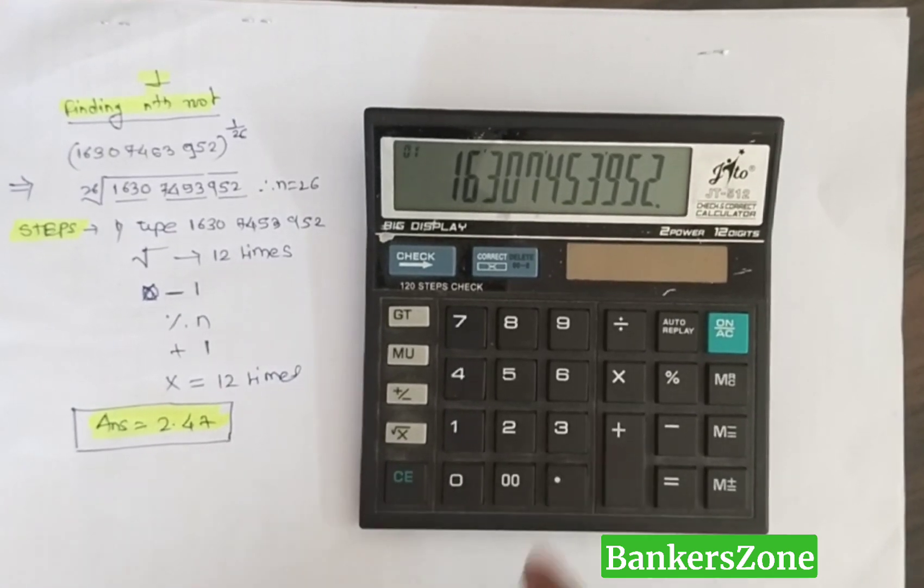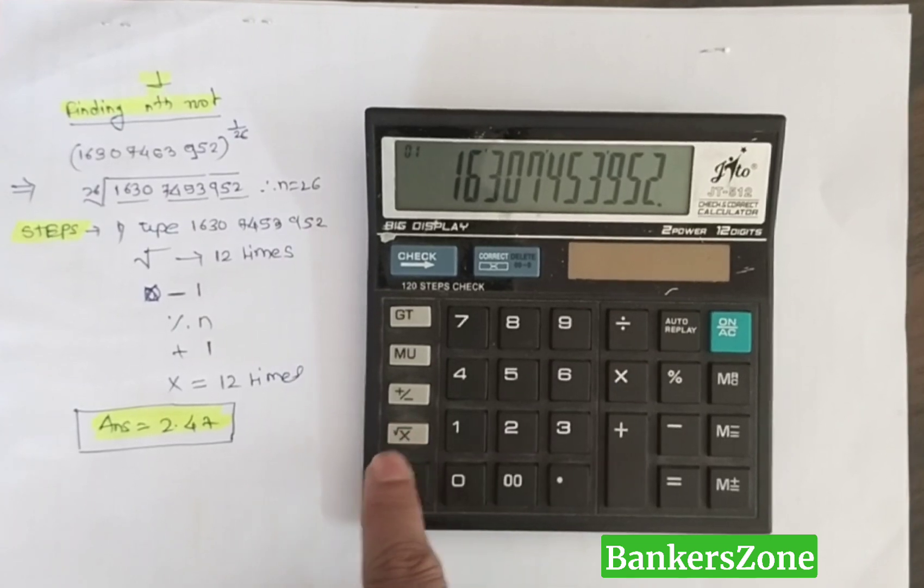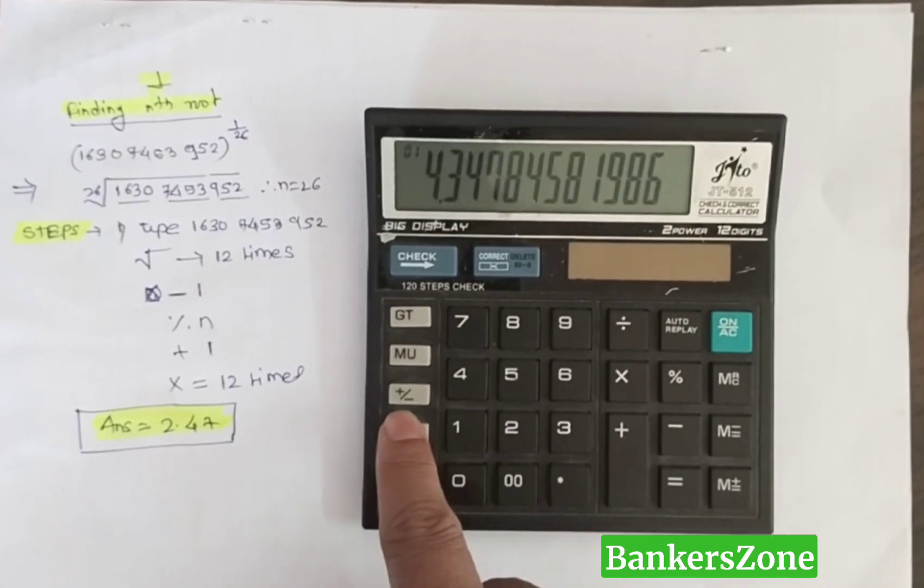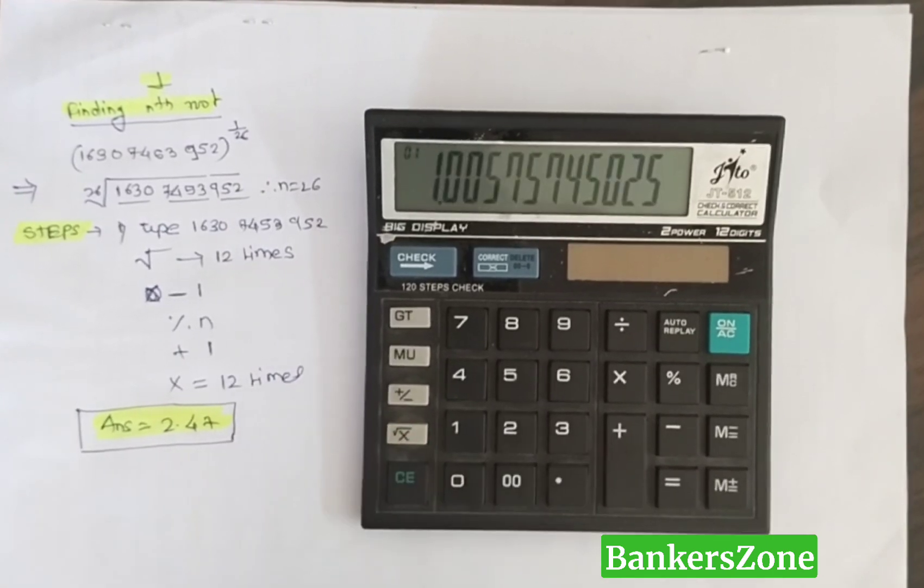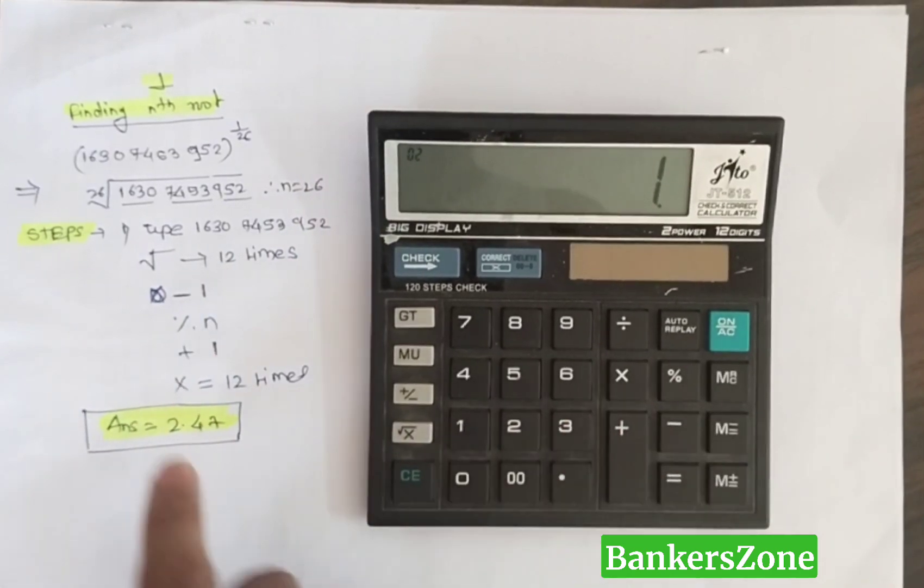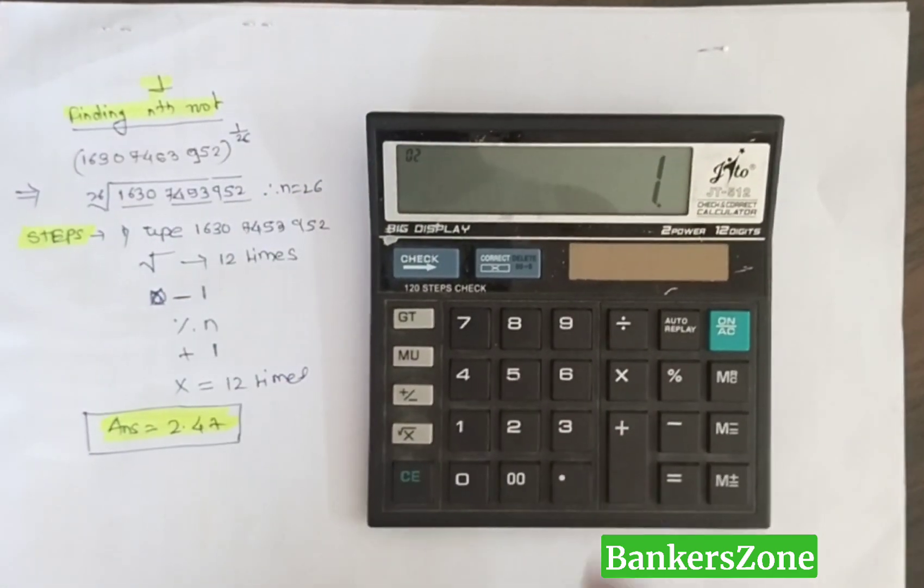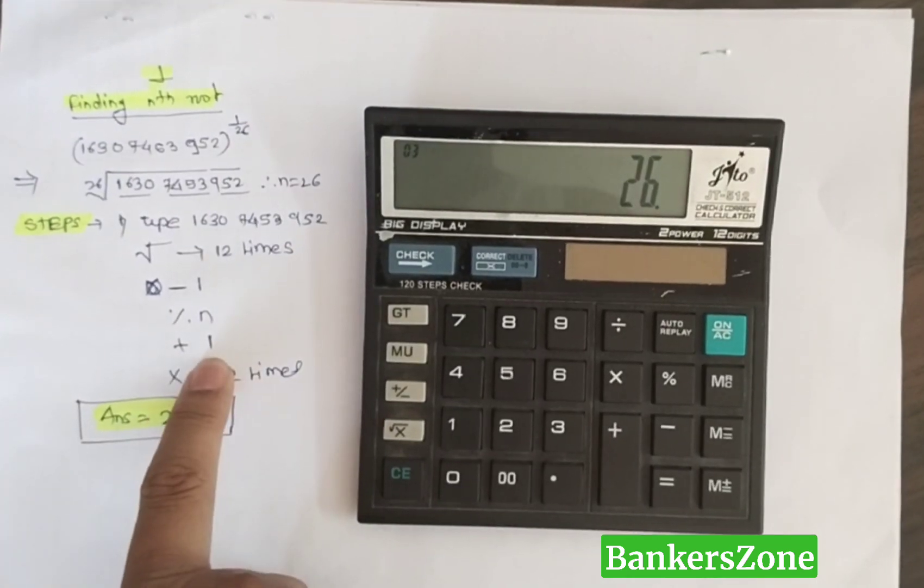Type the number first, then press the root sign 12 times: 1, 2, 3, 4, 5, 6, 7, 8, 9, 10, 11, 12. Then press minus 1. Next, divide by n - here n is 26 - so divide by 26. Then plus 1.